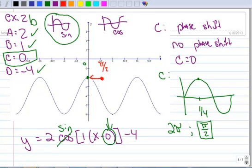But it's been shifted to the left. And I draw an arrow that way. So that tells me that C then is negative because it went left. π over 2.